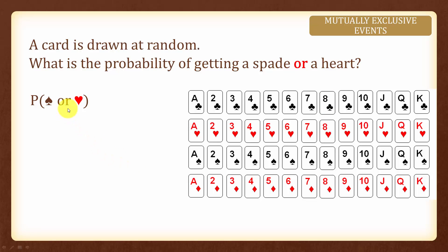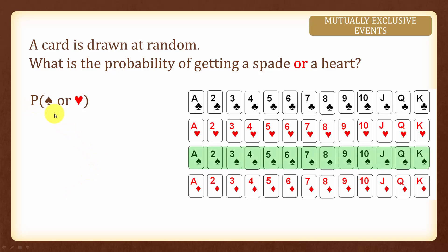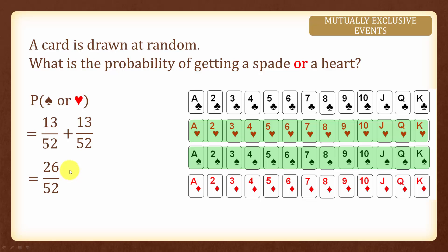What is the probability of getting either a spade or a heart? There are 13 spades and 13 hearts, so altogether we have 26 over 52, simplified to 1 over 2. Or we can write the probability of getting a spade as 13 over 52 plus the probability of getting hearts as 13 over 52, giving us 26 over 52, which equals 1 over 2.